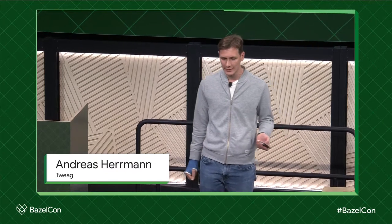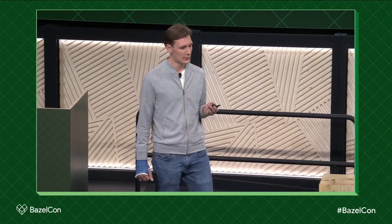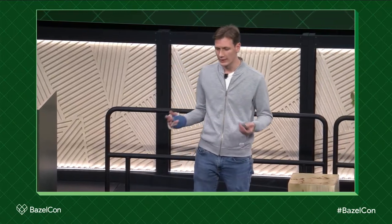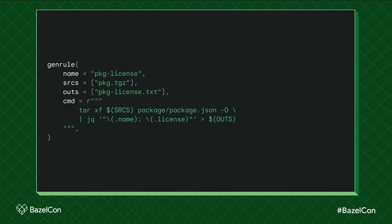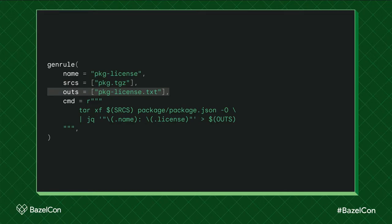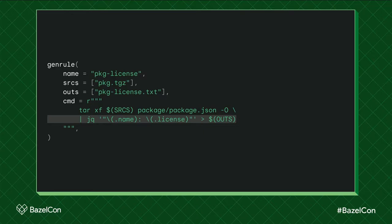So when I say shell script, what do I actually mean? I really mean any action that invokes some external tool — some binary, some other thing. A common example would be a gen rule, but it extends to other examples. For this talk I want to work through something concrete, so I'm looking at a gen rule. This gen rule generates a mapping from a package name to the license it uses, for a package defined in a package.json file in a tarball. It takes a tarball as input, generates a text file as output, by first invoking tar to extract the package.json file and then using jq — the JSON query tool — to pick out the name and license fields.